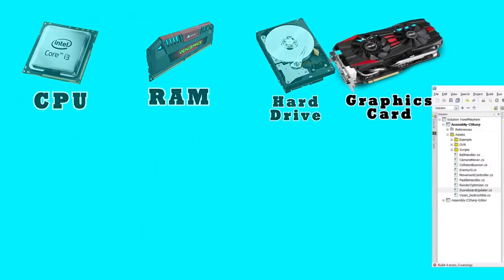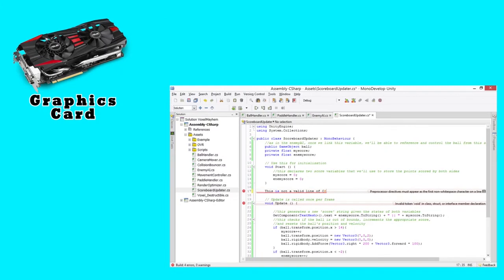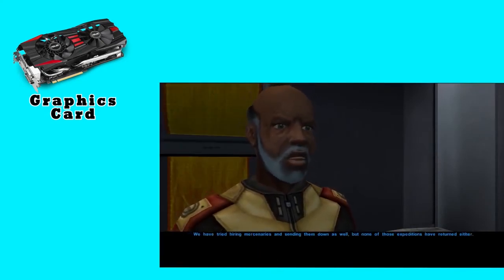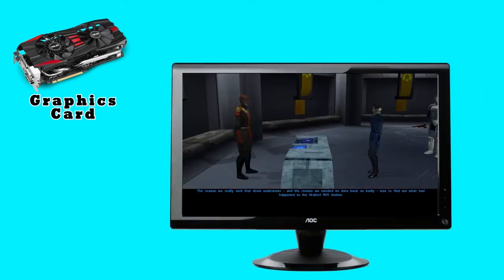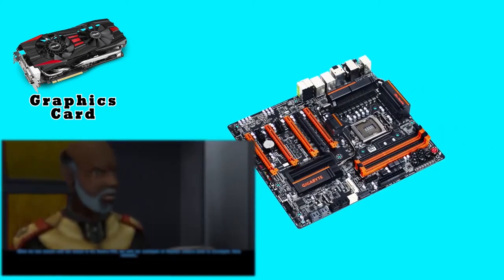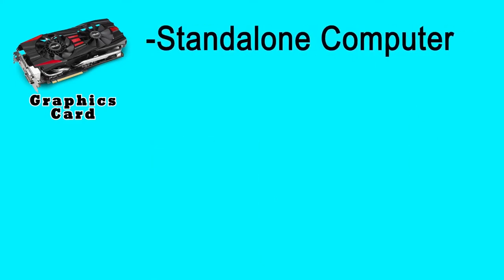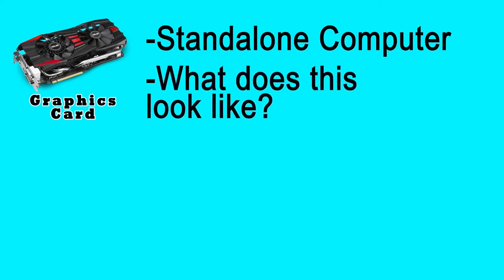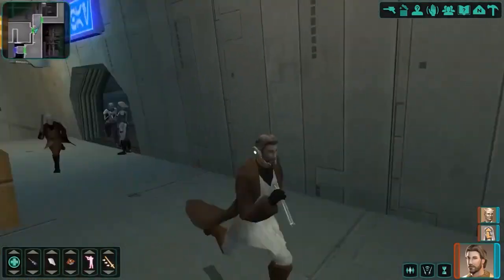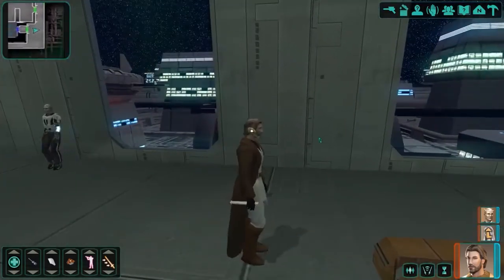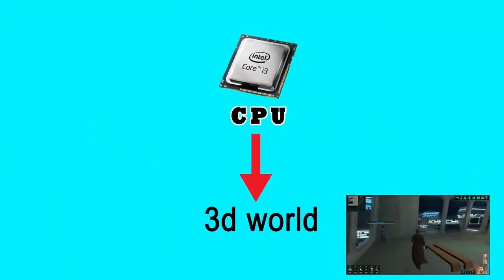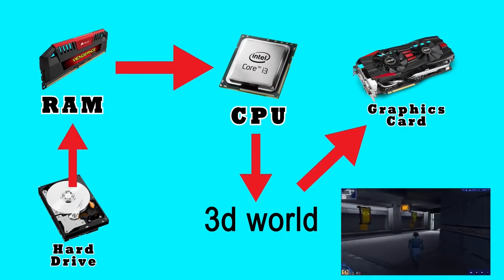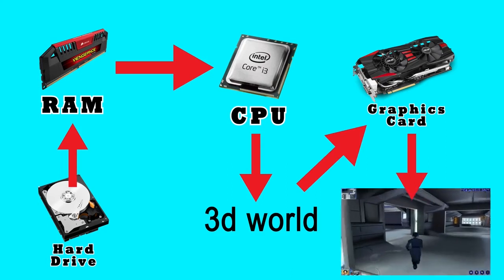Finally we get to the graphics card. With all of the calculations going on in your computer to turn ones and zeros into a constantly updated three-dimensional world, the final and most important step is to display that on your monitor. It's possible for your motherboard to do this alone, but it's not going to look good. Your graphics card is essentially an entire computer in and of itself, dedicated to figuring out what pixels need to light up on your screen, in what color, and at what time. If you were playing a game with a busy, high-texture world, your CPU creates that world using data stored in your RAM, which was loaded from your hard drive — but it's your graphics card that figures out what it's supposed to look like based on where you're standing in the world.